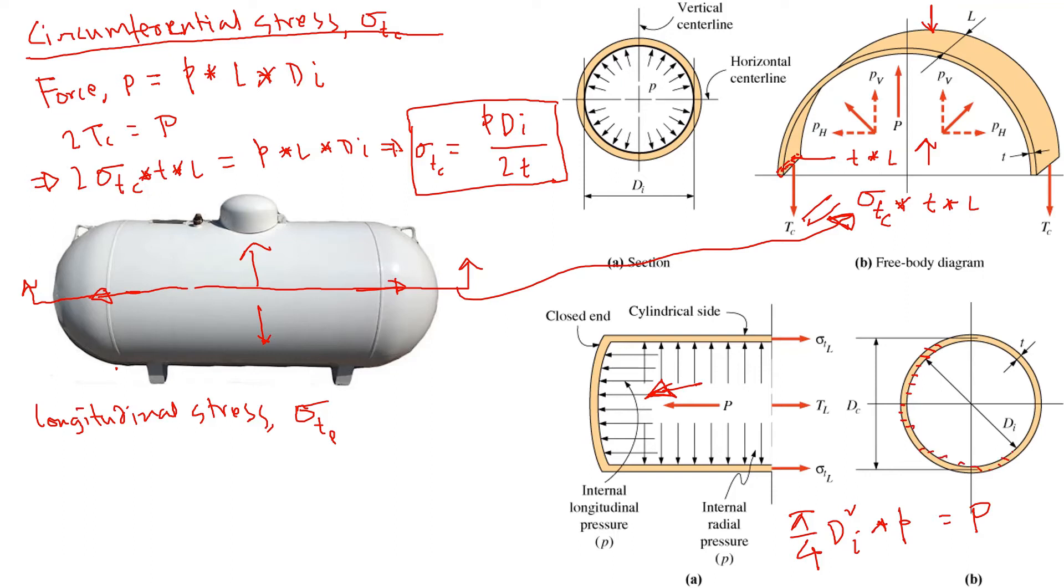To calculate the tensile force, this is the metal or material area. That area we can calculate by pi D times the sigma tensile L. We balance these two forces. The force due to the pressure, which is pi by 4 di squared times the small P, is equal to the balancing force due to the material. That force is pi D times thickness, pi di times thickness T times the sigma T L.